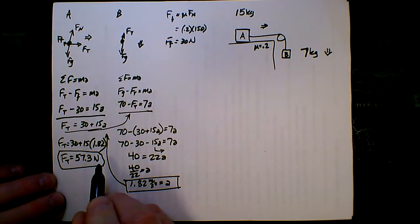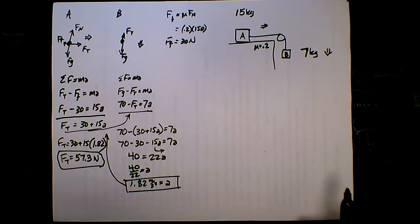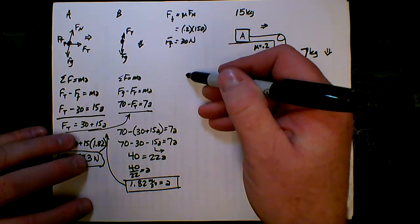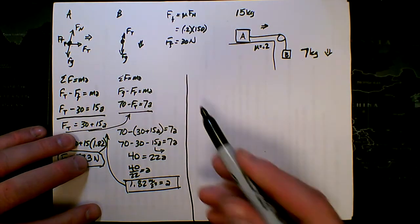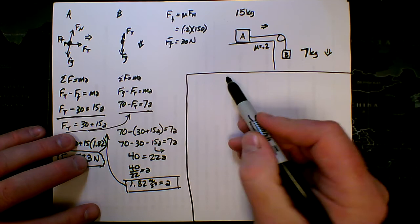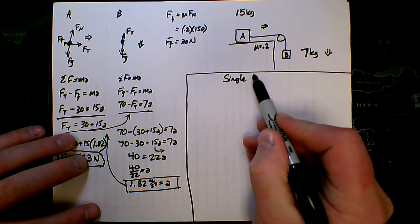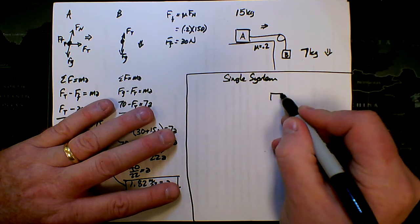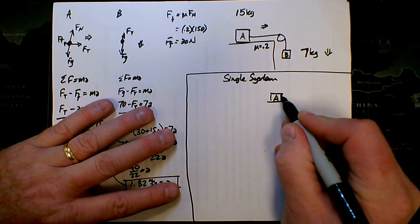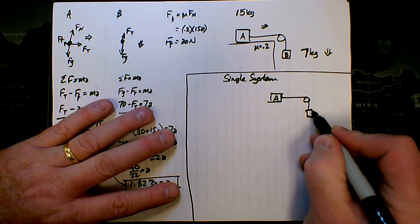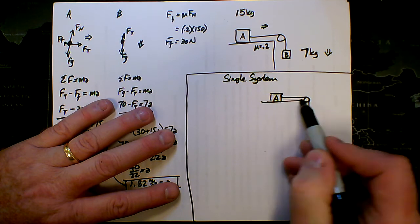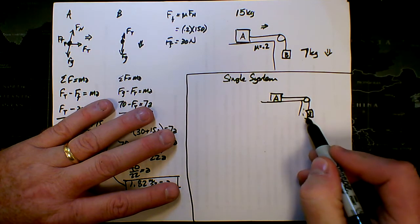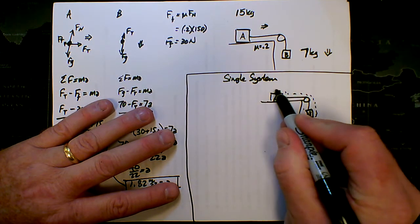That is how we deal with friction when we're dealing with a multi-object system. Now, we could take the other approach, which is the single system approach. In the single system approach, we're going to treat our system as a single system.